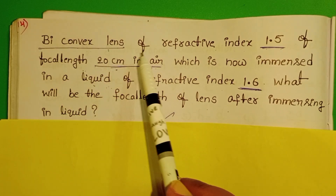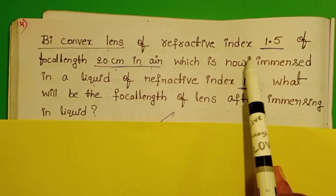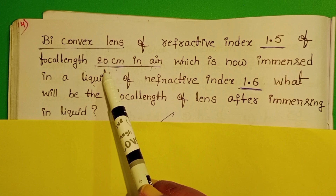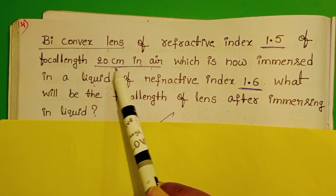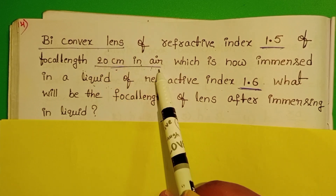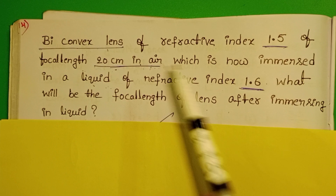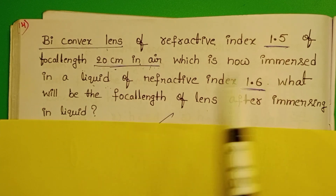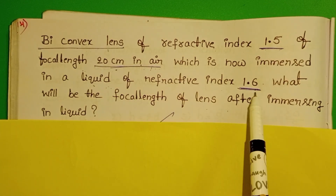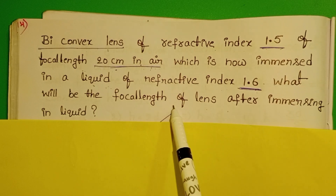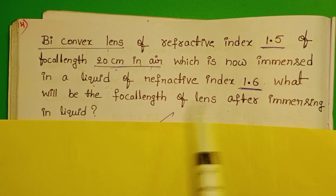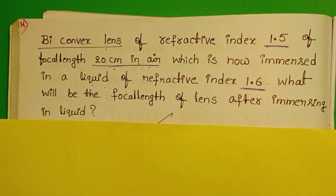A biconvex lens of refractive index 1.5 has a focal length of 20 cm when placed in air. The lens is now immersed in a liquid of refractive index 1.6. What will be the focal length of the lens after immersing in the liquid?